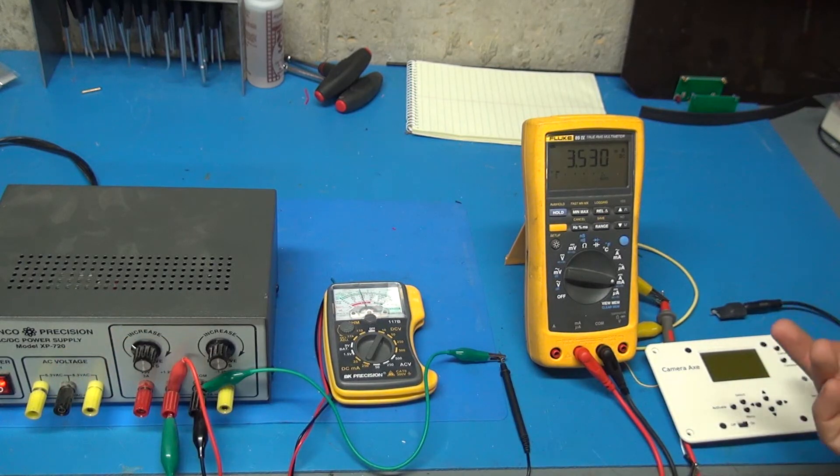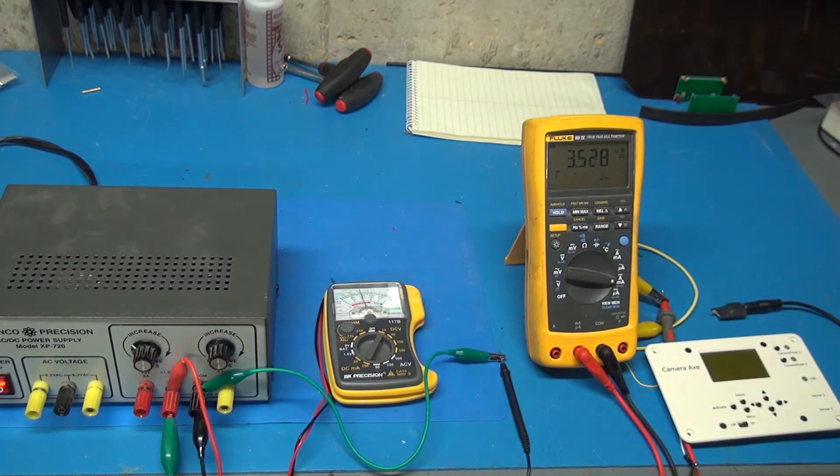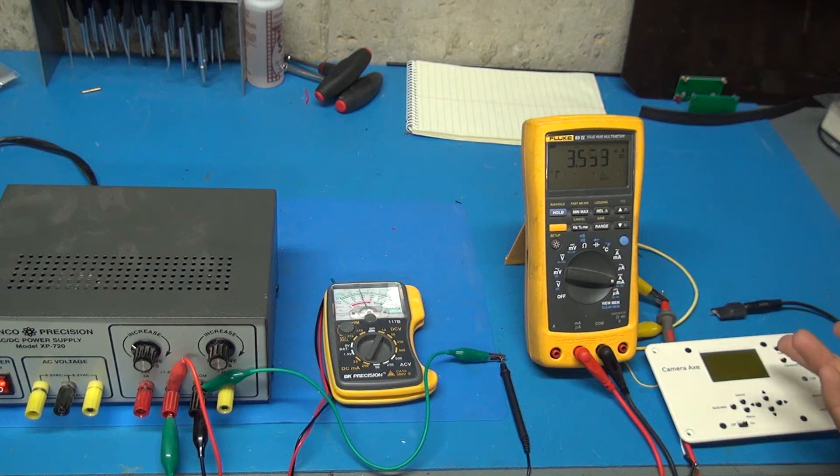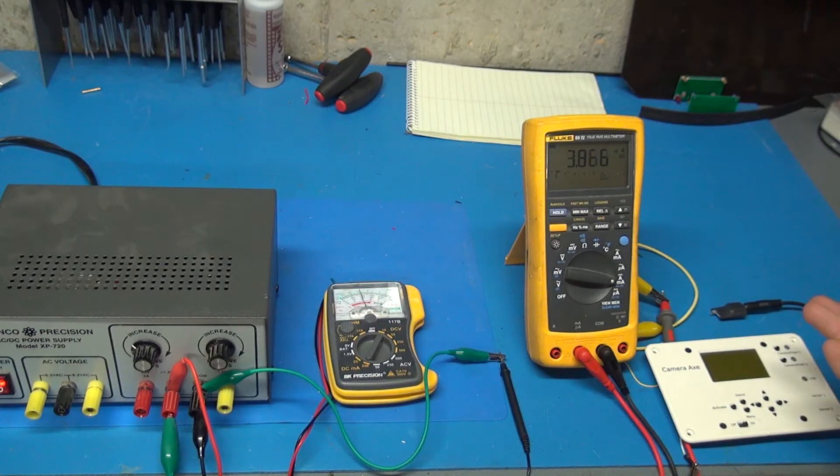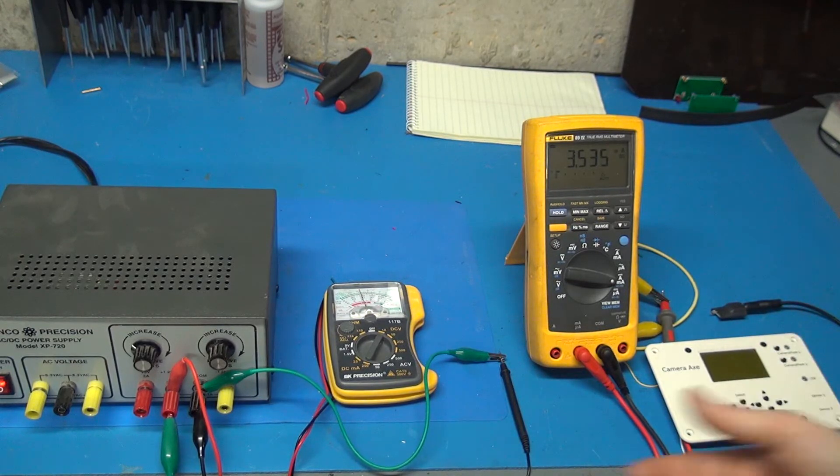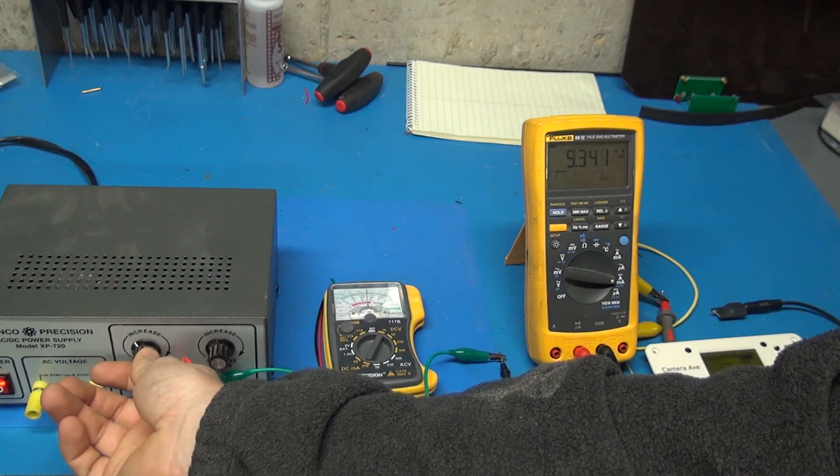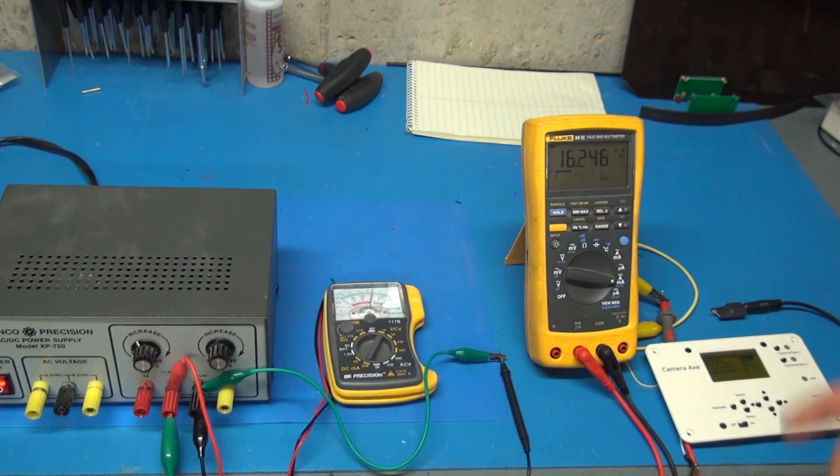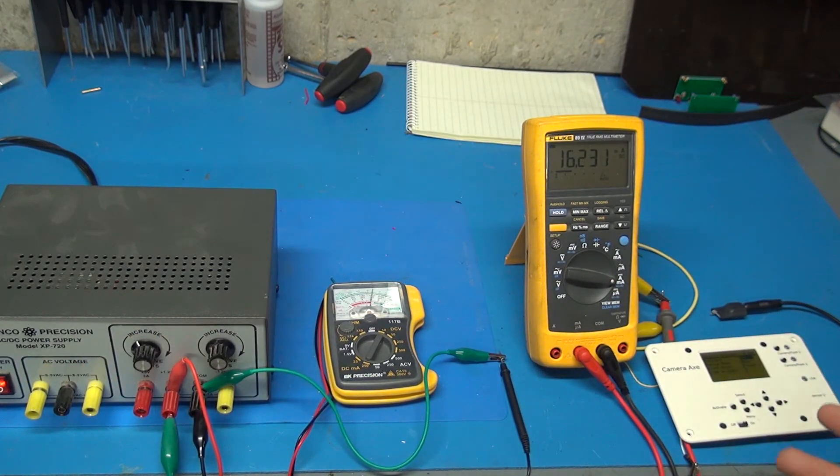There it went out at 4 volts. That basically means the Camera Axe is going to turn itself off and not function when the batteries are outputting less than 4 volts or around 4 volts with the backlight off. If you had the backlight on, it's more like 6 volts where it cuts out. That's pretty much all I wanted to show you of the setup.